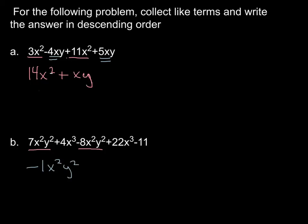now let's move on to our second terms to combine. We've got a 4x³ and a 22x³. 4x³ plus 22x³. 4 plus 22 is 26x³.